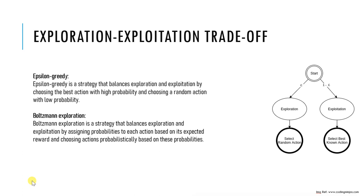Epsilon-greedy is a simple strategy for balancing exploration and exploitation. It works by taking the action with the highest expected reward with probability one minus epsilon, and taking a random action with probability epsilon. The epsilon parameter controls the degree of exploration versus exploitation, and a higher epsilon leads to more exploration. Most of the time, epsilon is set to 0.7 or 0.8 to maintain a good balance.